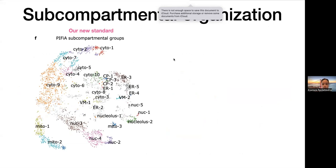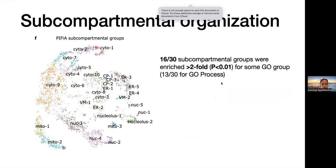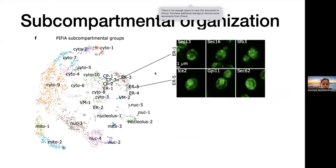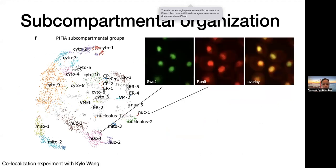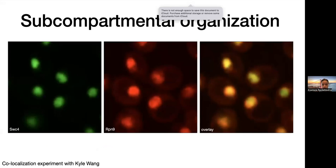Based on this evidence, we devised our own standard of subcompartmental groups driven solely by PFIA morphological features. In this standard, 16 out of 30 obtained subcompartmental groups were enriched for some gene ontology category. Some clusters were driven by clear morphological differences — for example, ER clusters one and five looked very different. However, nucleus cluster four, corresponding to transcription, and nucleus cluster one, corresponding to proteasome, looked very similar visually. A colocalization experiment revealed that proteasome proteins form a red ring — a nuclear periphery signal — driving that distinction, supported by studies showing proteasomes at the nuclear periphery may act as transcription regulators or degrade proteins.